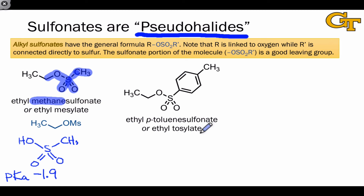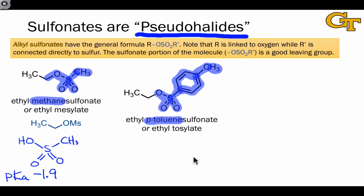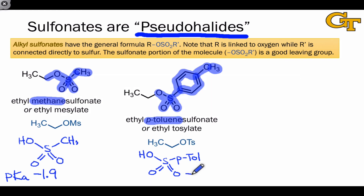Para-toluene sulfonate, or more commonly tosylate, is another very common sulfonate. The para-tolyl group is the carbon group connected to sulfur — again, not the electrophilic portion of the molecule. The electrophilic carbon is the one connected to oxygen, and the entire fragment highlighted in blue is the departing leaving group, abbreviated OTs. The conjugate acid — tosic acid, or para-toluene sulfonic acid — is a strong acid with pKa about −2.8, slightly more acidic than methanesulfonate. There's a good structural reason for that difference which I'll let you think through.